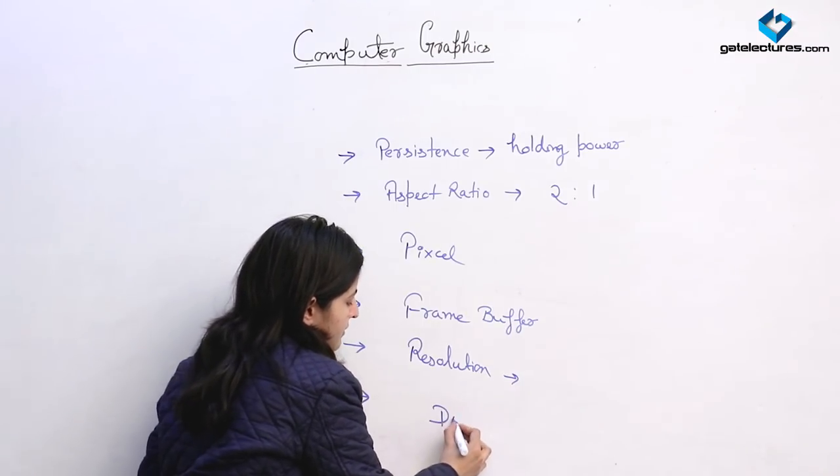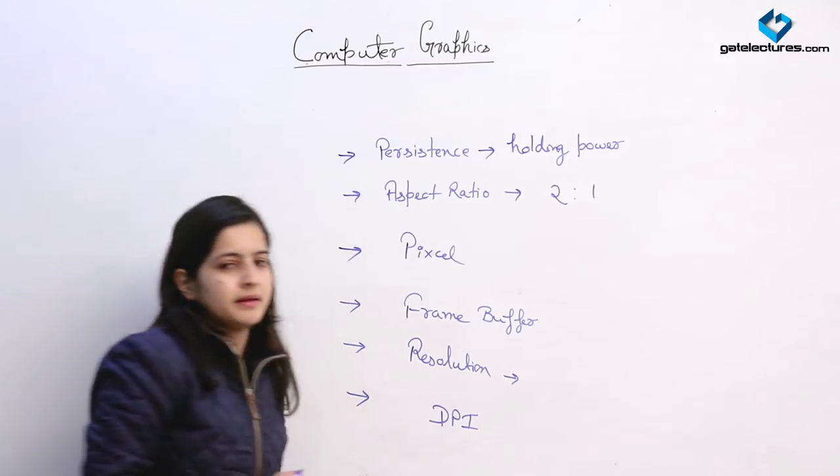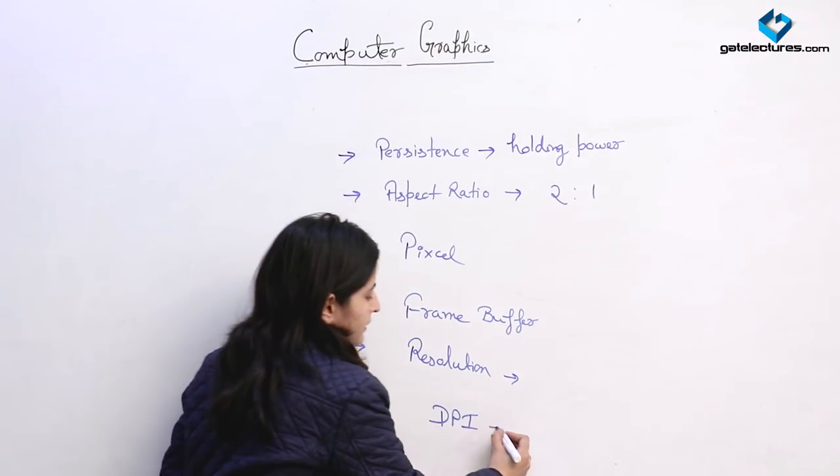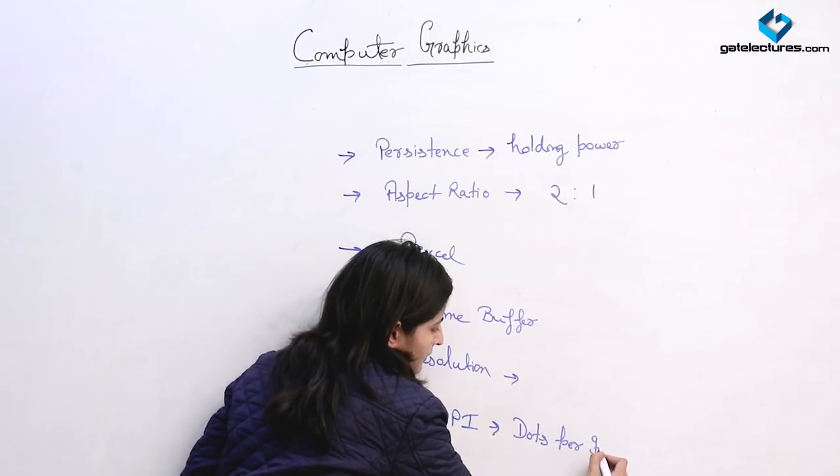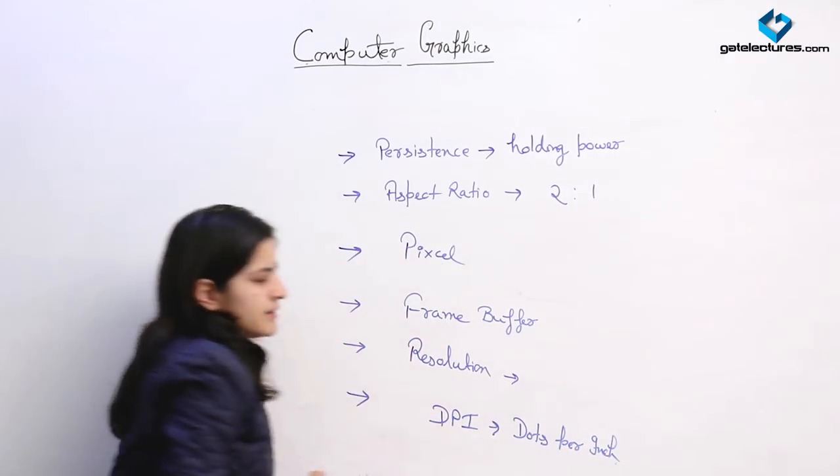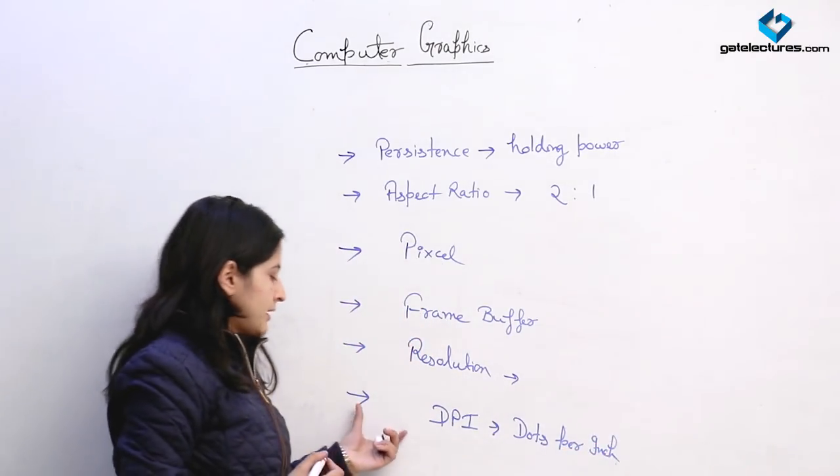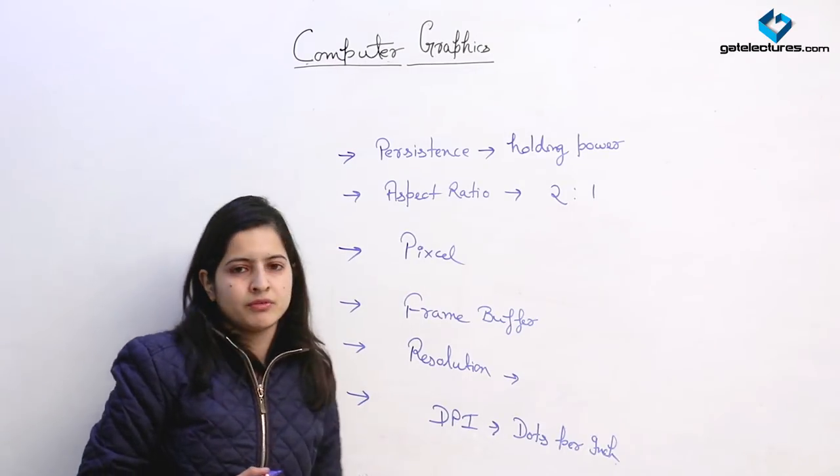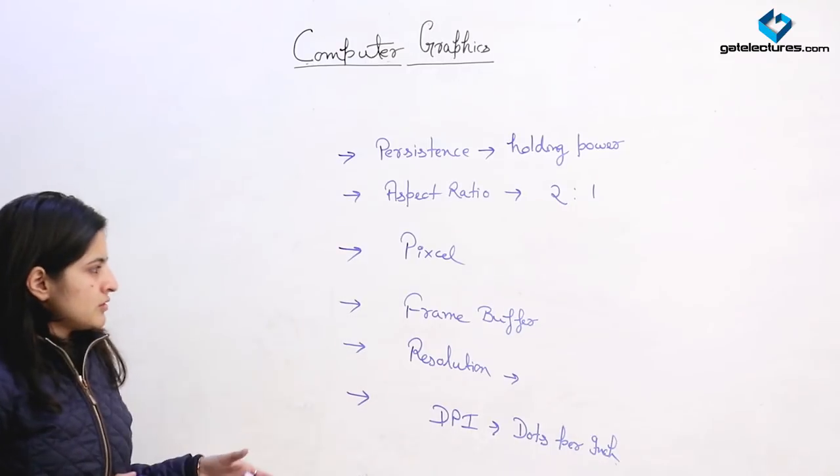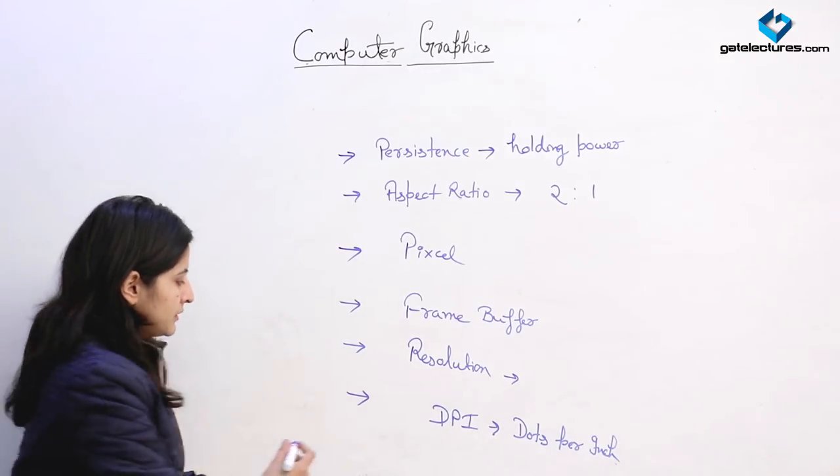Another term generally seen in the numerical part is DPI, which stands for dots per inch. We will see some numericals based on these terms and how we calculate the resolution power of a screen and find out the DPI of a screen. For these numericals, we should be clear with these terminologies.